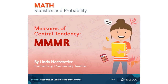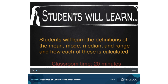Today we're going to be talking about Measures of Central Tendency — MMMR. This was originally made by a teacher who teaches elementary and secondary named Linda Hochletler, and it has been adapted by Ms. Cruz, Ms. Reese, and Ms. San Miguel. Our student learning objective today will be: students will learn the definitions of the mean, mode, median, and range, and how each of these is calculated. The estimated classroom time today is 20 minutes.